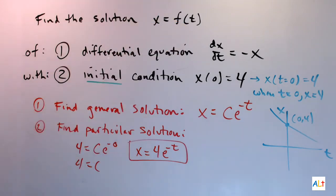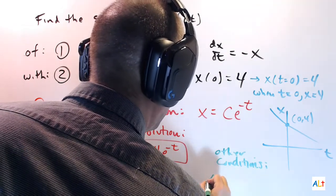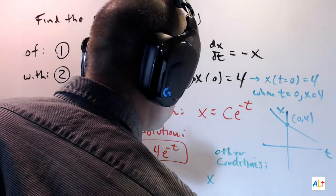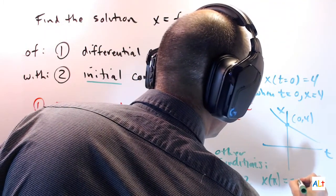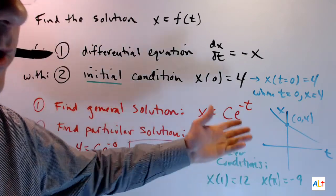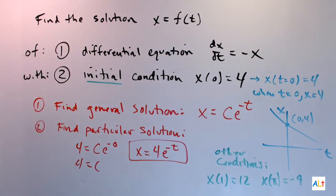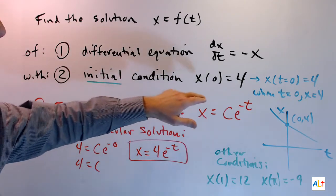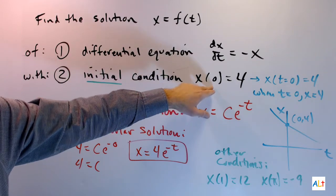Now a condition doesn't have to be initial. You could have x of 1 equals 12, or x of pi equals negative 9, whatever you like. If t is not equal to zero, then this is not initial, but it's still a condition, and you would still do the same thing. You would still substitute for x and t and find the value for c. In a differential equations class, it's pretty rare to have a condition that's not initial. So it's easy to get in the habit of assuming that t is always equal to zero, but you need to remember that it doesn't have to be.